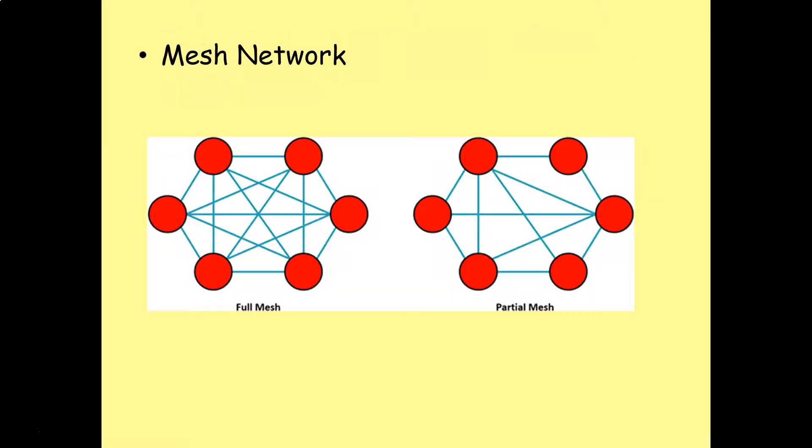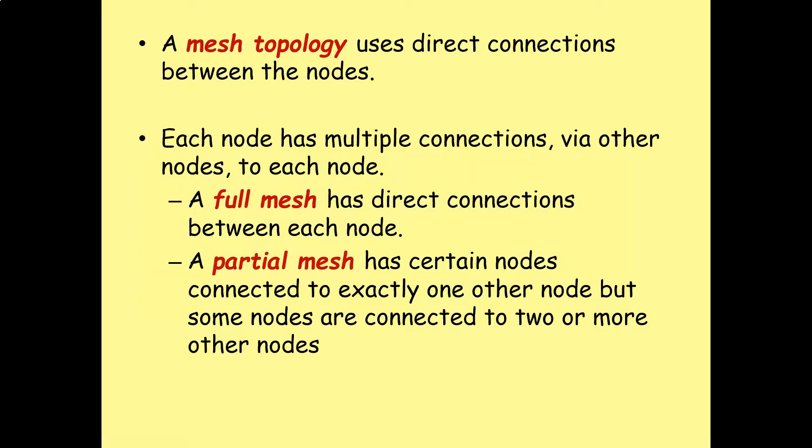Moving on, let's look at the mesh network topology. That's the other major topology that you need to know for the OCR GCSE. And there's two different kinds of forms of mesh network. We've got the full mesh and the partial mesh, which you can see in this diagram. A mesh topology uses direct connections between the nodes. Each node on a mesh topology has multiple connections via the other nodes to each node on the network.